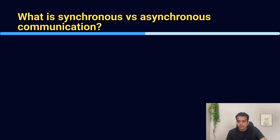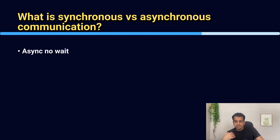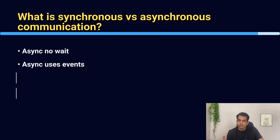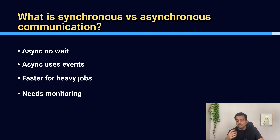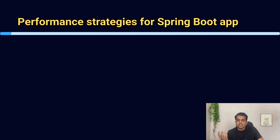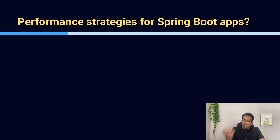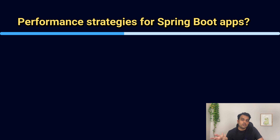The next question is performance strategies for a Spring Boot application. Basically, you need to tell what strategies you can use to enhance performance. You can use caching, reduce API payload size, enable compression, and tune the thread pool size. You can also optimize DB queries using pagination. Multiple techniques can be used, similar to what we discussed in the scaling question earlier.